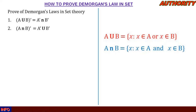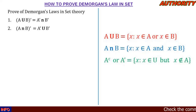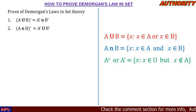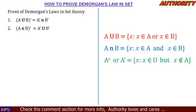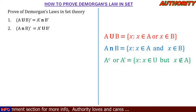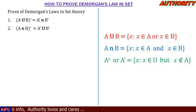We also considered A complement, written as A superscript c or A prime. We say that it is a set of elements x such that x exists in the universal set but does not exist in A. So all the elements in the universal set but not in the main set in question is called A complement.